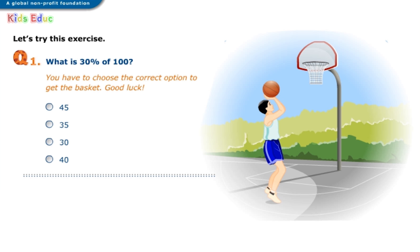Let's try this exercise. You have to choose the correct option to get the basket. Good luck. What is thirty percent of one hundred? Options: forty-five, thirty-five, thirty, forty. The correct answer is thirty.